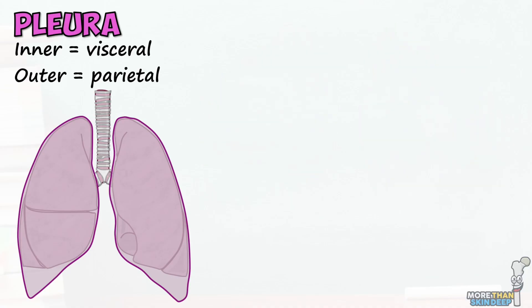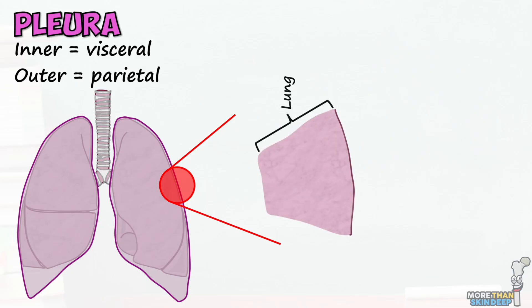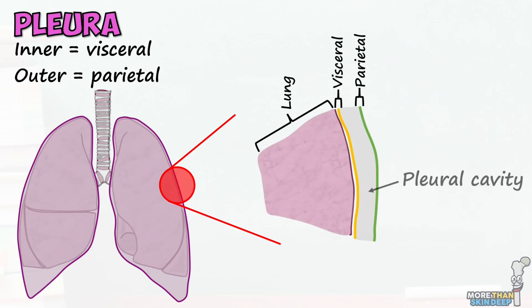Between the visceral and parietal pleural layers is a potential space known as the pleural cavity. This space is filled with around 20 milliliters of pleural fluid, which allows the lungs to slide over one another as the chest moves during respiration. There is a negative pressure within the pleural cavity, which essentially suckers the two layers of the pleura together, holding the lung inflated within the thoracic cavity and keeping it in close contact with the internal chest wall.